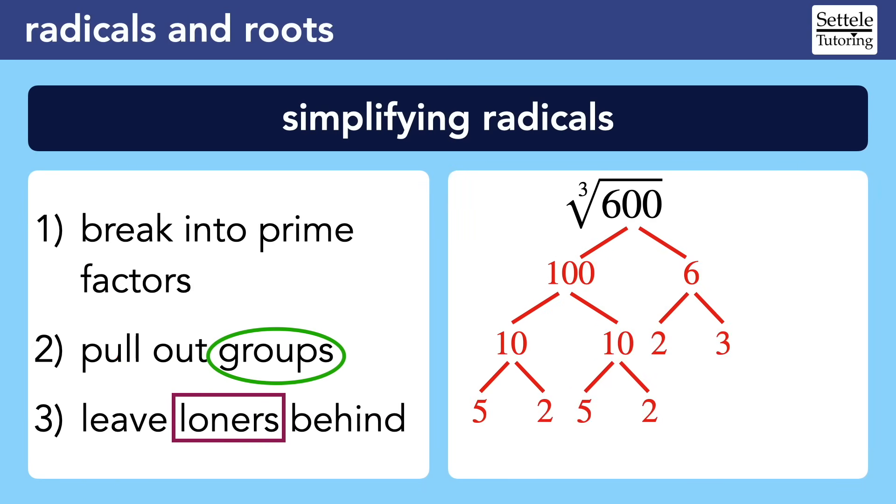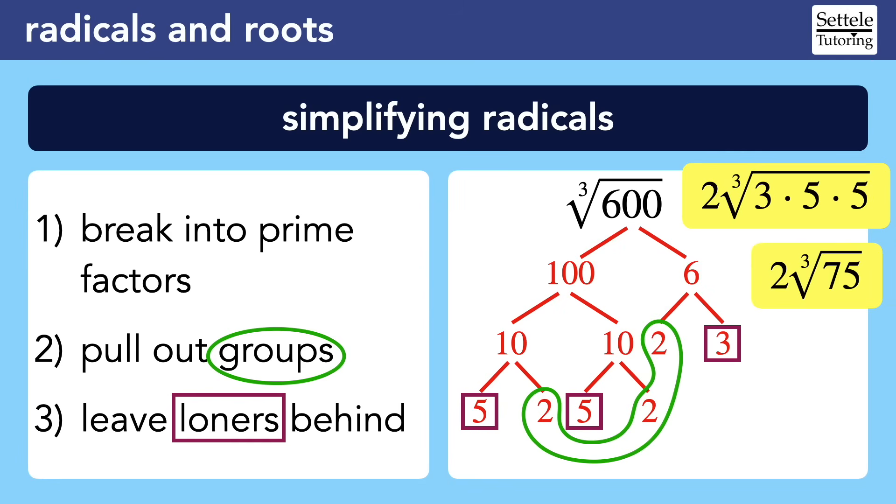Other roots, like cube roots, will work the same way. Notice that our prime factorization is the same as before. That's because 600 is always made up of the same prime factors. But now when we make groups, we have to make groups of 3 because this is a cube root. If it were a 4th root, we'd make groups of 4. If it were a 5th root, we'd make groups of 5, and so on. We can only make a group of 2s. The 3 is a loner again, but so are the two 5s because we don't have enough 5s to make a triple. Once again, the group of 2s comes out as a single 2, and the loners stay behind under the radical. Multiply to fully simplify as 2 times the cube root of 75.